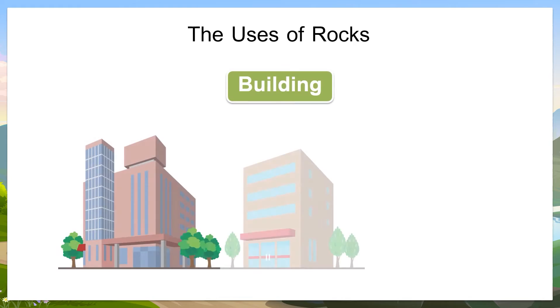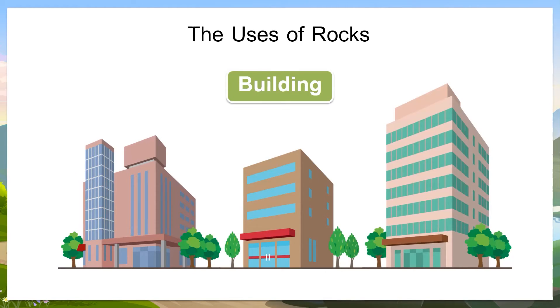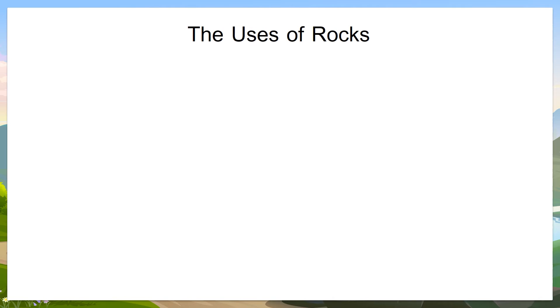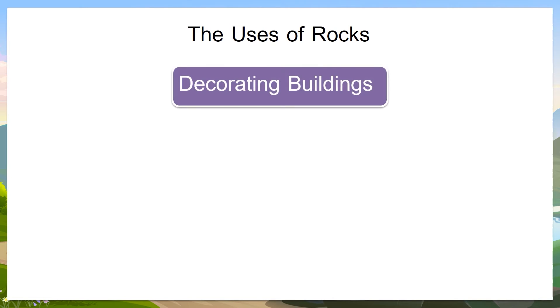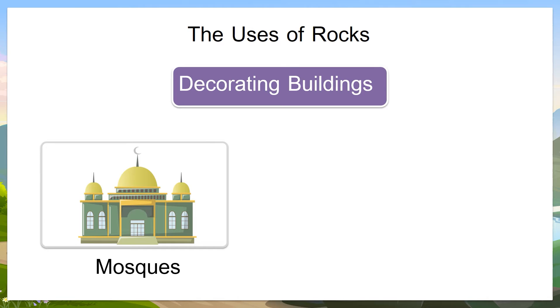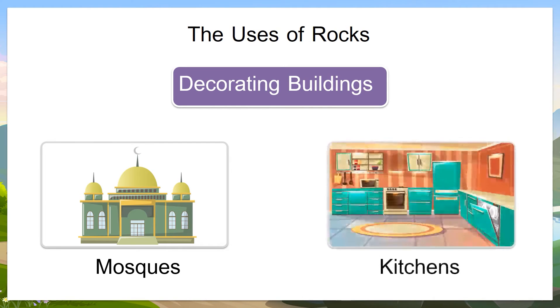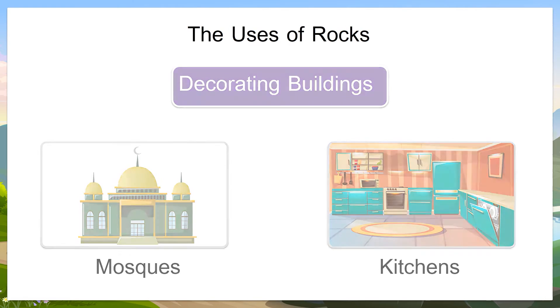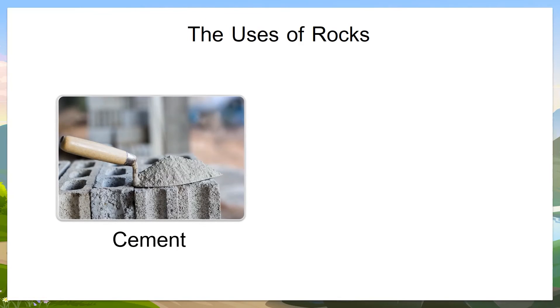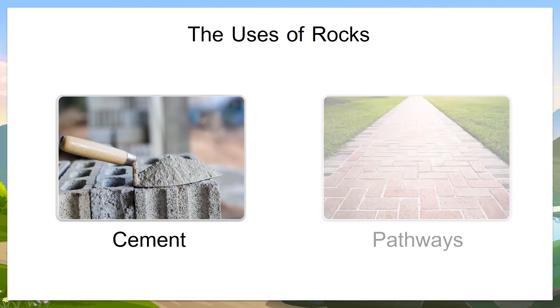The uses of rocks: rocks can be used for building things. We use rocks to build our homes. Rocks can also be used for decorating buildings, such as this mosque — look at this mosque, it is decorated with rocks. They can also be used to decorate kitchens; this kitchen is decorated with marble. Cement is also made of rocks, and rocks are used to make pathways.